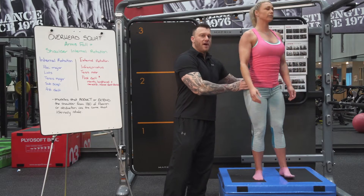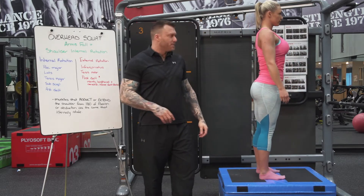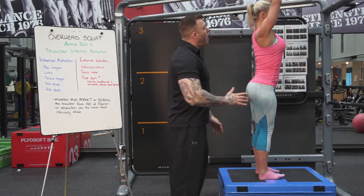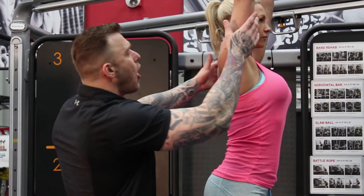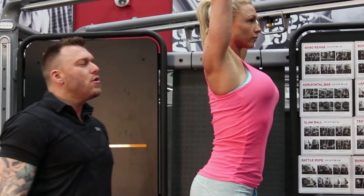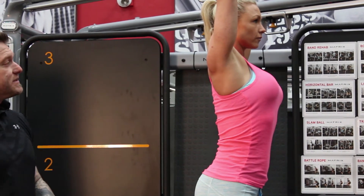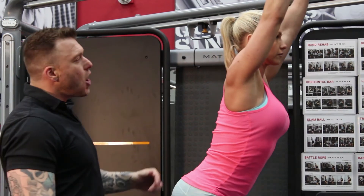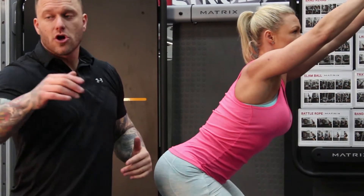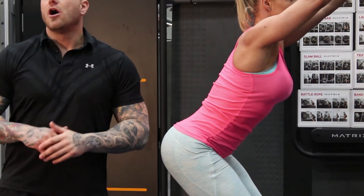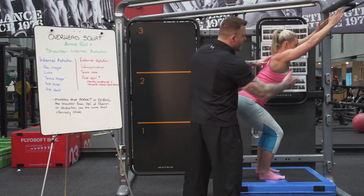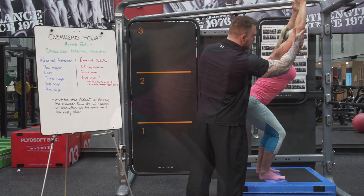Now let's do a side profile. What we're looking for here — and we'll exaggerate this a little bit, Sarah — as the client goes down to a squat, this part of the arm should always be hiding the ears. If you notice when the client comes down into their squat position, if those arms start to fall forward and we can see the ears even just a little bit, this would constitute a check mark on this assessment. Even if they have a lean this way, the arms have to stay back in this position.